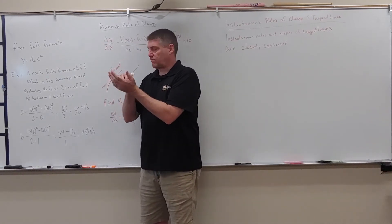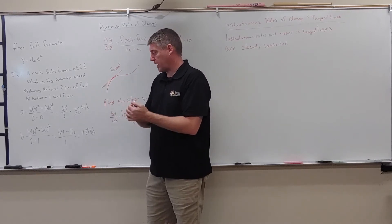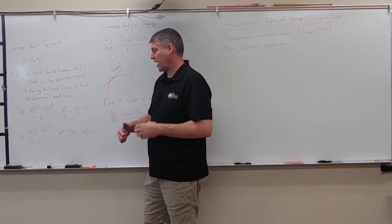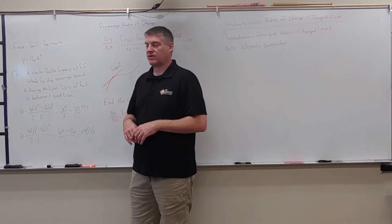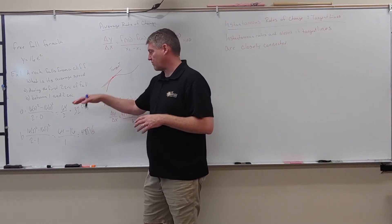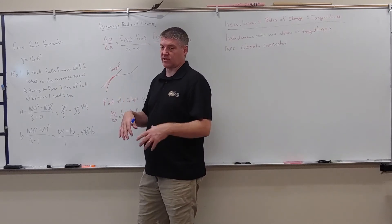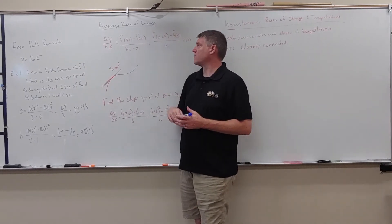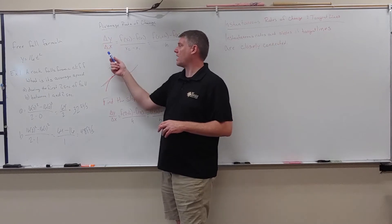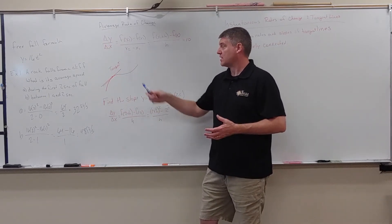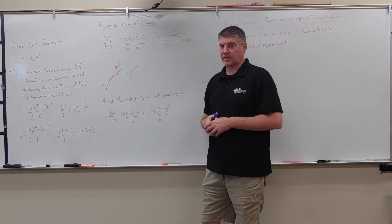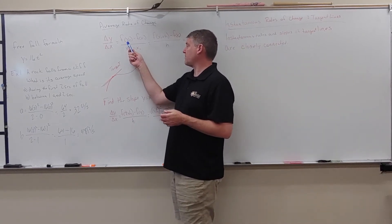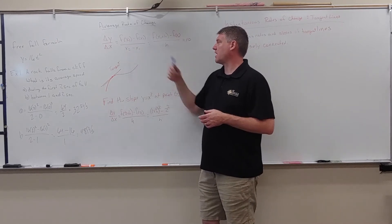Our velocity when the rock first starts falling is 0, and then at 2 seconds it has a velocity of 64. We kind of look at the average between those — this is our average rate of change, the difference in y's over the difference in x's. This should look like the slope formula. Slope and average rate of change are synonymous: f of x₂ minus f of x₁ over x₂ minus x₁.